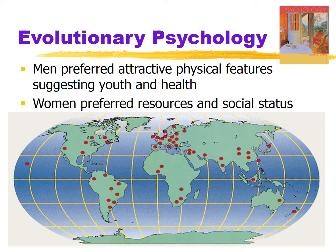Evolutionary psychology points out traits of the two sexes which are true across cultures and across time. When it comes to mate selection in heterosexual relationships, men prefer attractive physical features in women that suggest youth and health. Whereas for women, although the looks of the man are important as cues to their overall health and ability to help look after offspring, women tend to look for men who have resources — money and social status — as cues that this man will be a good match for protection of offspring and long-term support.